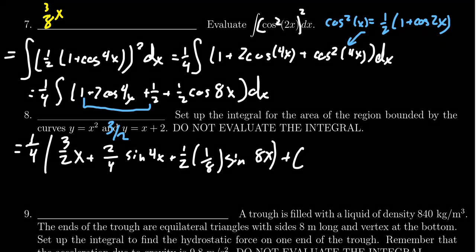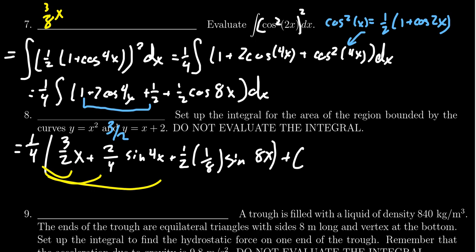And so now as you distribute this one fourth onto all the pieces, one fourth times three halves x gives you three eighths x. Next, the one half here is, or the two fourths actually becomes a one half. So we're going to get one eighth sine of 4x, like so.